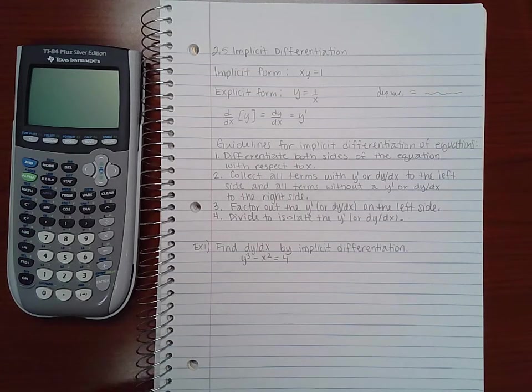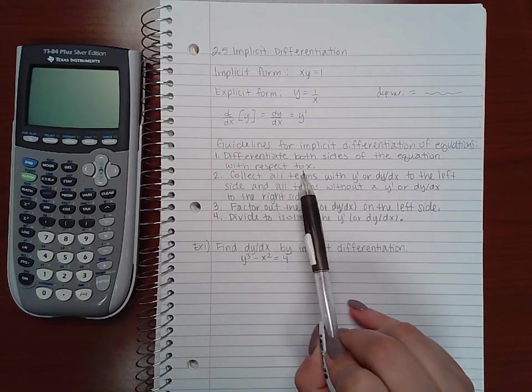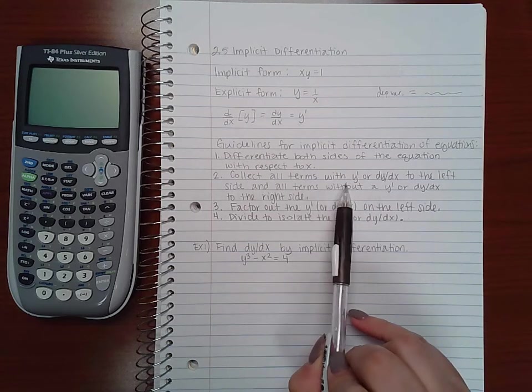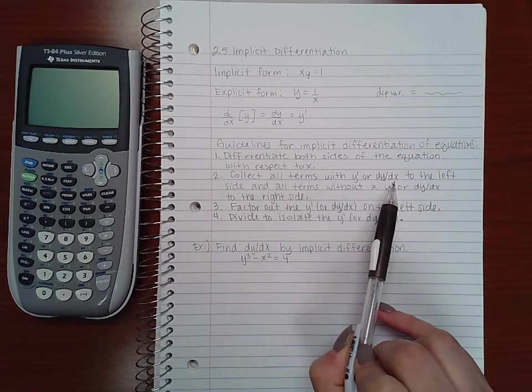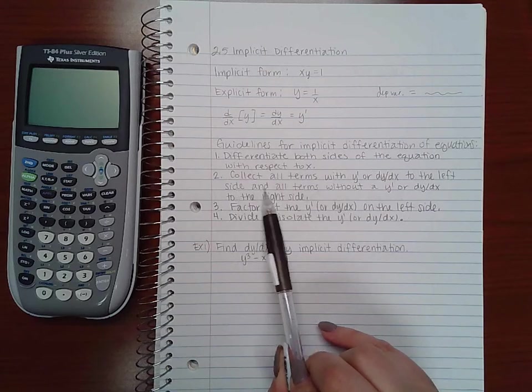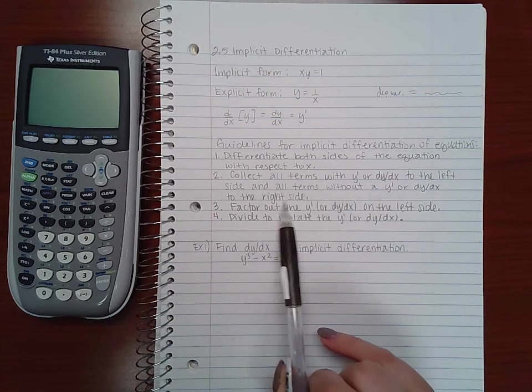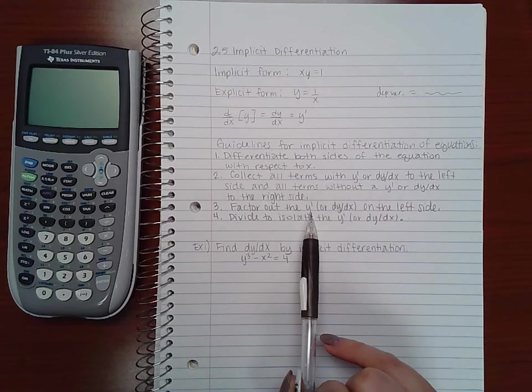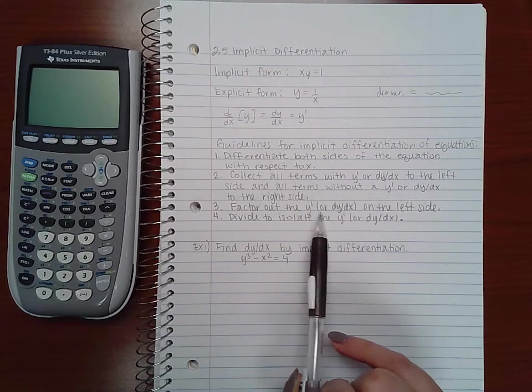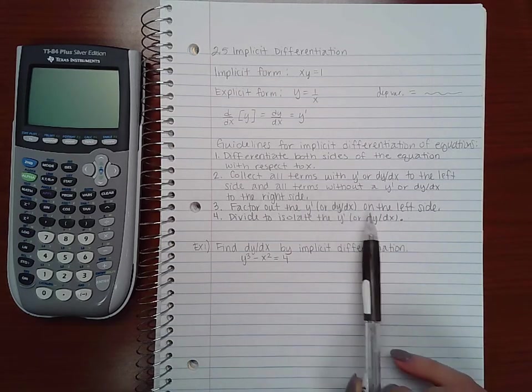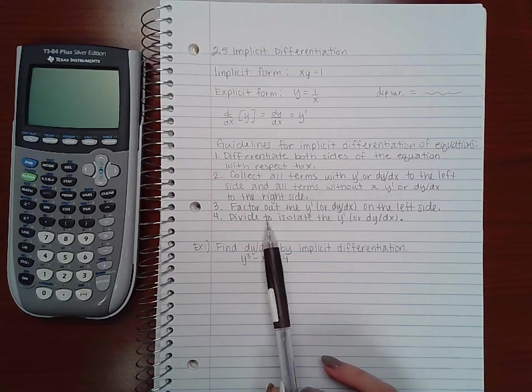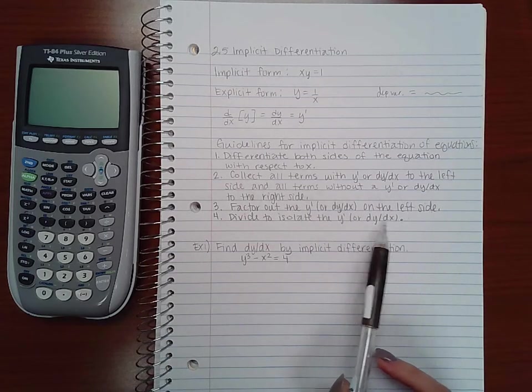Here are the guidelines for implicit differentiation: One, differentiate both sides of the equation with respect to x. Two, collect all terms with y prime or dy/dx to the left side and all terms without to the right side. Three, factor out the y prime or dy/dx on the left side. Four, divide to isolate the y prime or dy/dx.